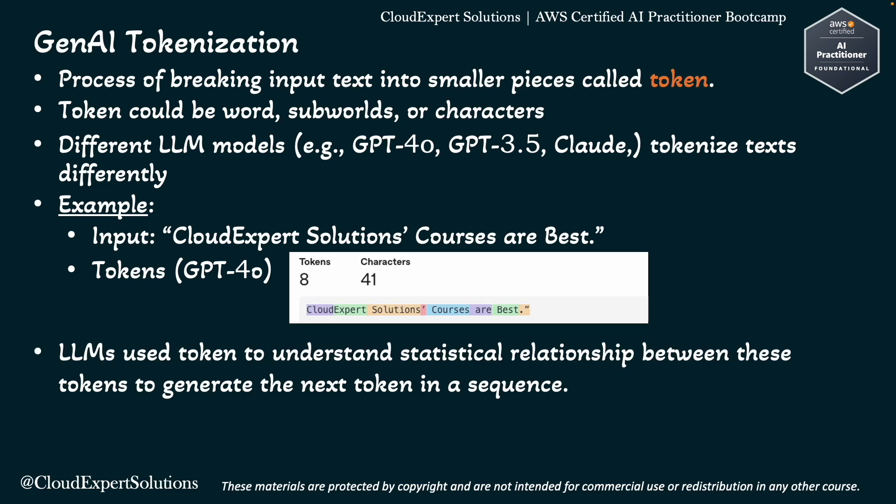When you are using large language models to generate text, the LLM uses tokens to understand the statistical relationships between words to produce the next word in a sequence of tokens or in a sentence.